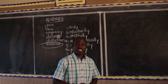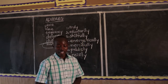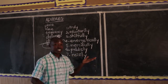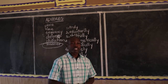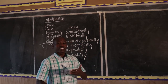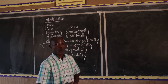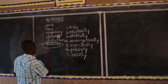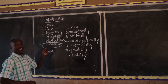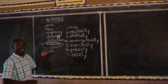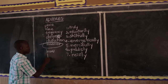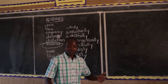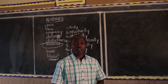In simple terms, adverbs of manner tell us how an action will take, takes, is taking, or took place. The keyword you should get is 'how'. Adverbs of manner answer the question of how. We are going to go ahead and look at some examples of adverbs of manner.